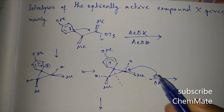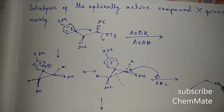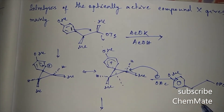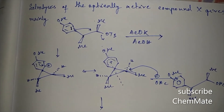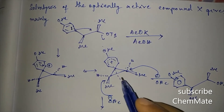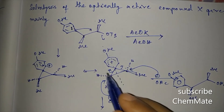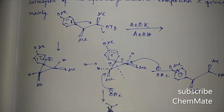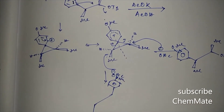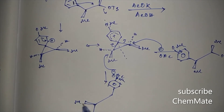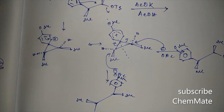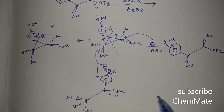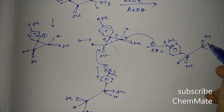OAc minus attacks at one carbon to give one product with OAc, phenyl, OMe, and methyl groups, with hydrogen below the plane. Attack at the other carbon via ring opening gives a second product similarly substituted with hydrogen also below the plane. We then determine the configurations at the stereocenters in both products.